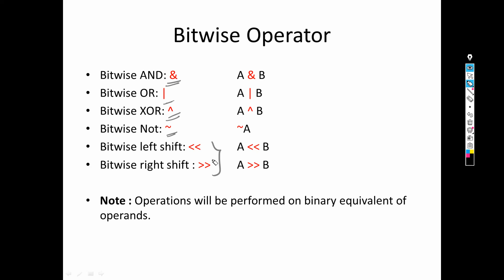All these operators are binary operators. Why binary? Because they use both operands A and B — there are two operands in all these operators except bitwise NOT. We also need to keep in mind that the operation is performed on the binary equivalent of the operands.